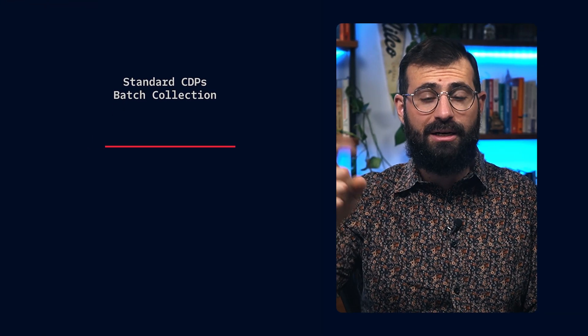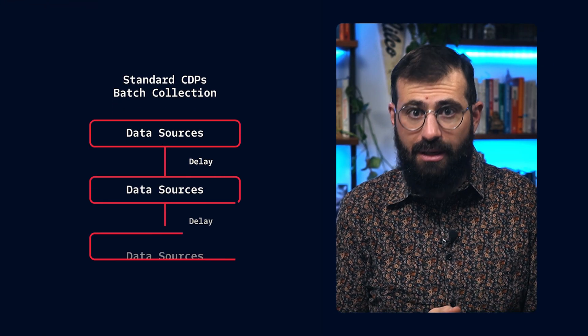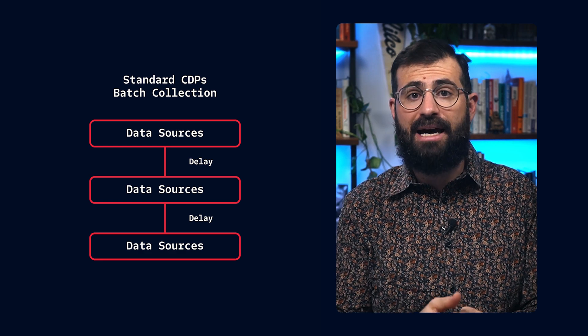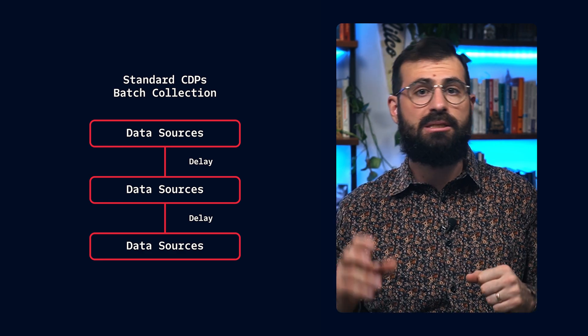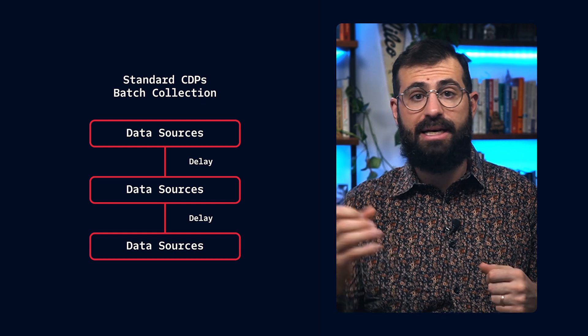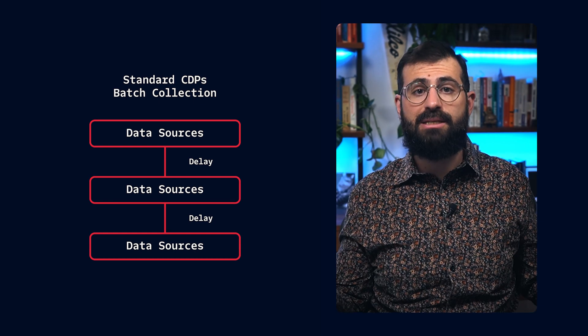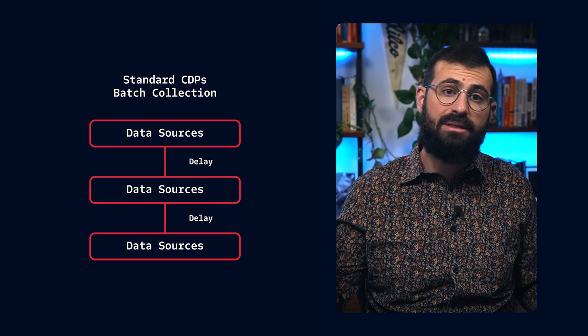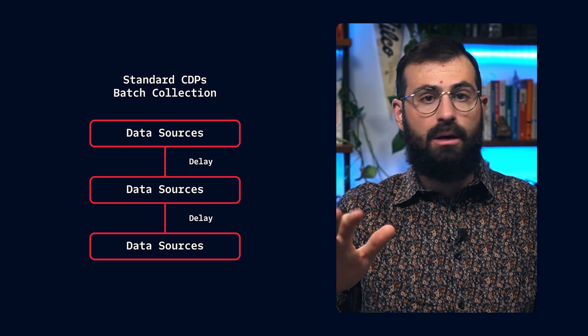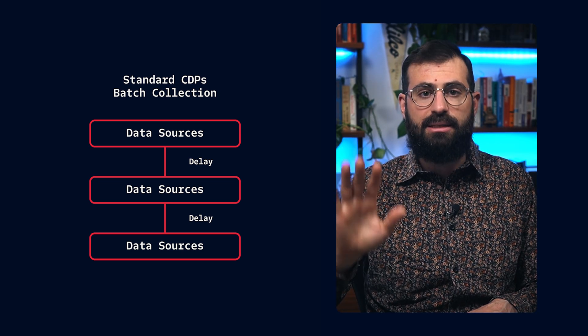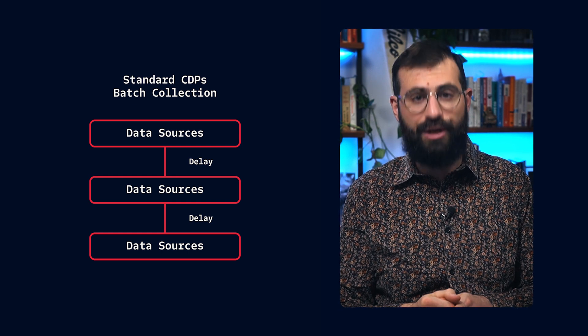So what exactly does a CDP do, and how does Twilio Segment take it further? Let's break it down. Step one: collect data. A CDP's first job is to gather customer data from multiple sources — websites, mobile apps, backend servers, and data warehouses. Most CDPs collect this data in batches, which means delays. Twilio Segment does this in real time. Developers can drop in a simple JavaScript snippet, and Segment starts tracking user interactions immediately.